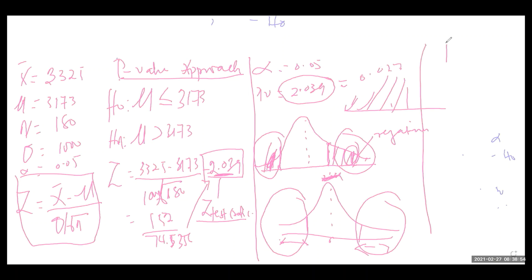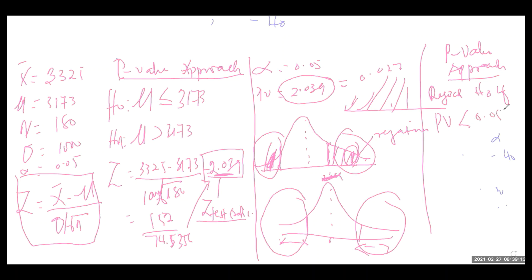The question says to use the p-value approach. Therefore, we reject H0 if our p-value is less than alpha, which is 0.05. Our p-value is 0.027, and alpha is 0.05, which is greater. Because 0.027 is less than 0.05, we will reject H0.